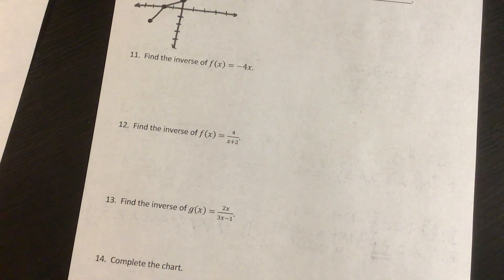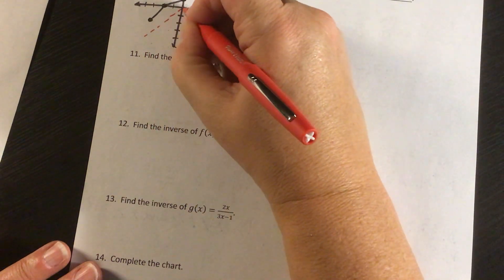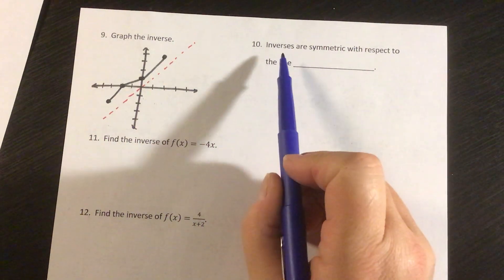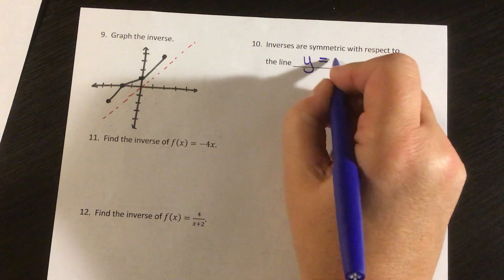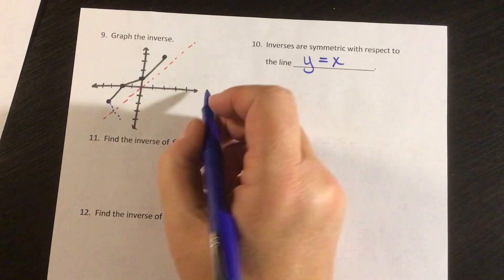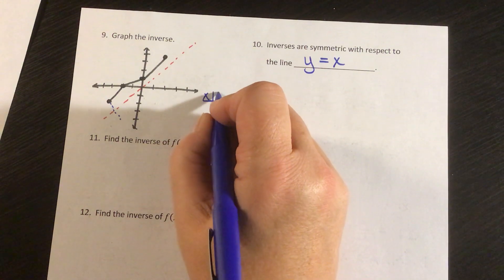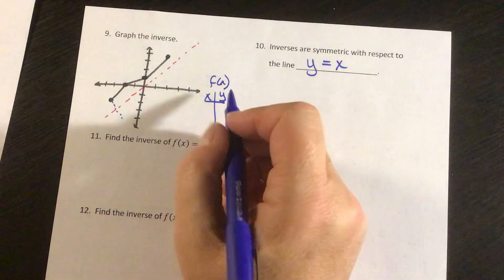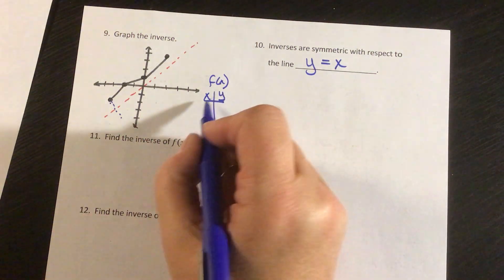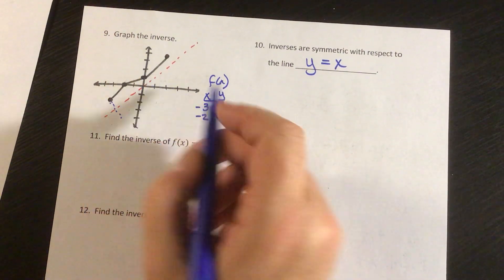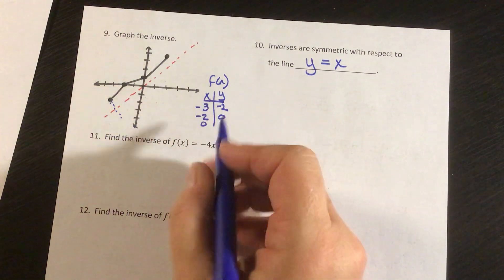It's asking us to graph the inverse. I'm going to draw in the y equals x line because a graph's inverse has to be reflected over that line. Inverses are symmetric to the line y equals x. I can make a table of values for x and y. In my function I have the points: negative 3, negative 2; negative 2, 0; 0, 1; and 2, 4.